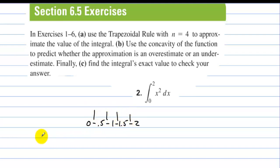And each interval, the height of the trapezoid is going to be 0.5, so we have 0.5 over 2 times. We have 0 squared plus 0.5 squared plus 1 squared plus 1.5 squared, times 2, and then plus 2 squared. And we get an answer of 2.75.